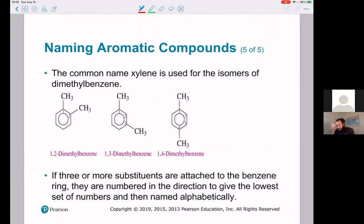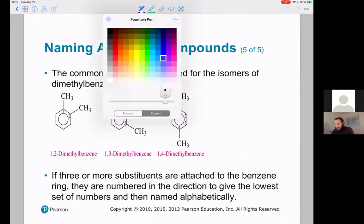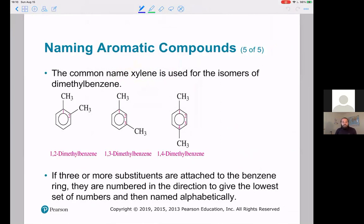The same thing goes for when there's methyl groups instead of chloro groups—really any of those groups we talked about before. This would be 1,2-dimethylbenzene, 1,3-dimethylbenzene, 1,4-dimethylbenzene. They have this common name xylene when it's two methyl groups on the benzene. Again, I'm much less focused on having you know every common name and more focused on having you build the IUPAC names.